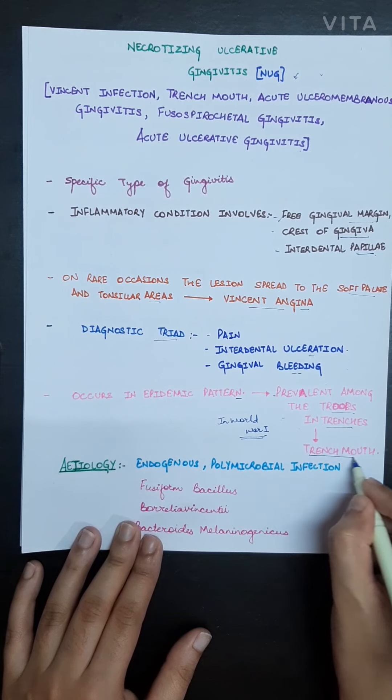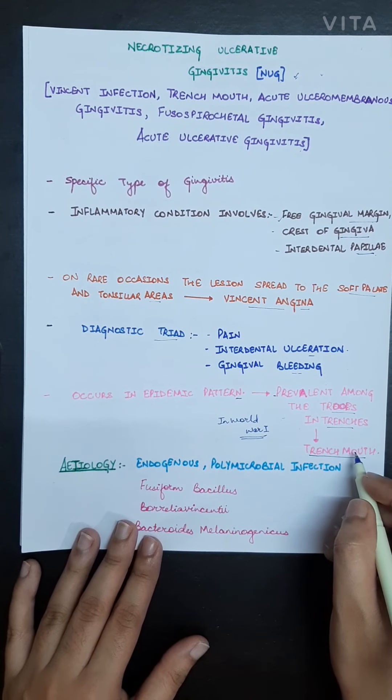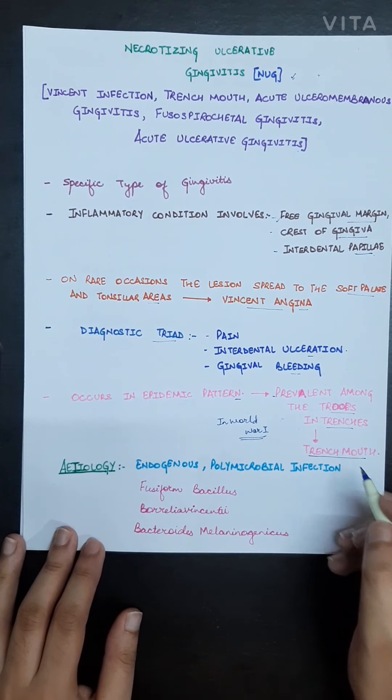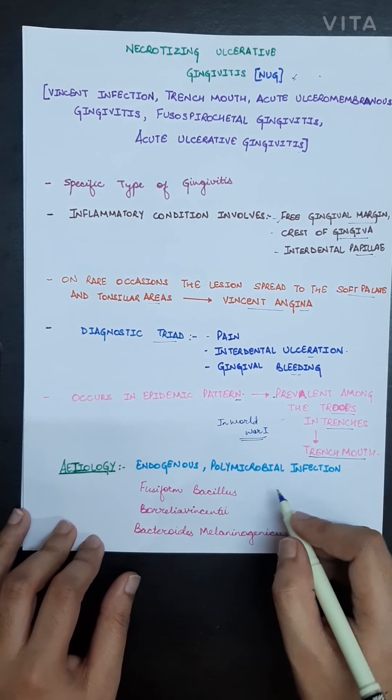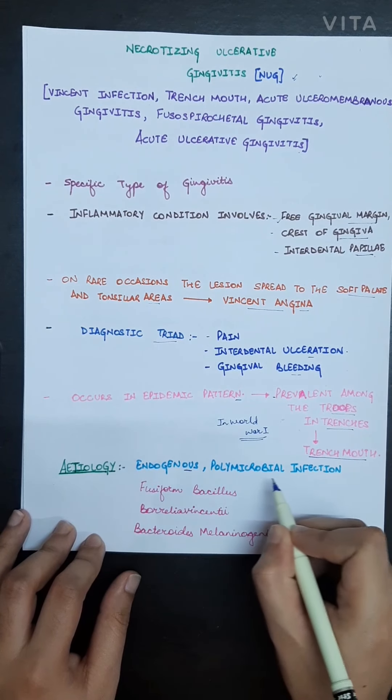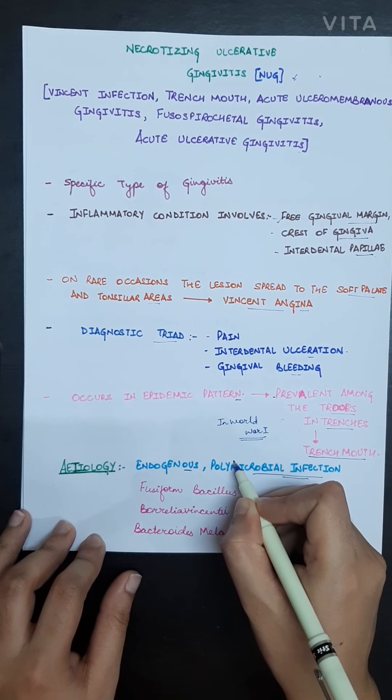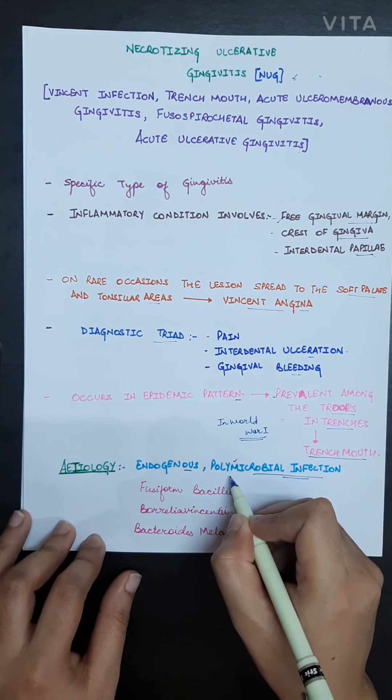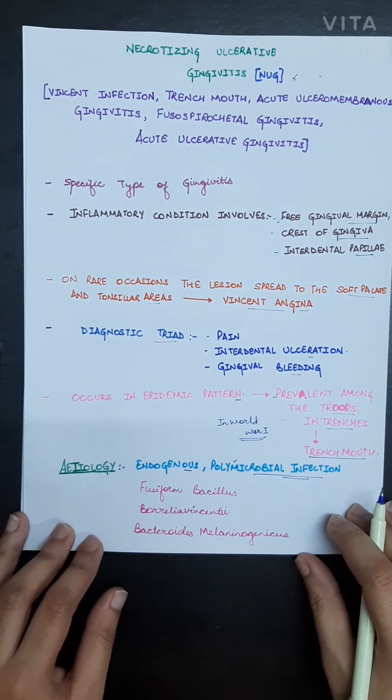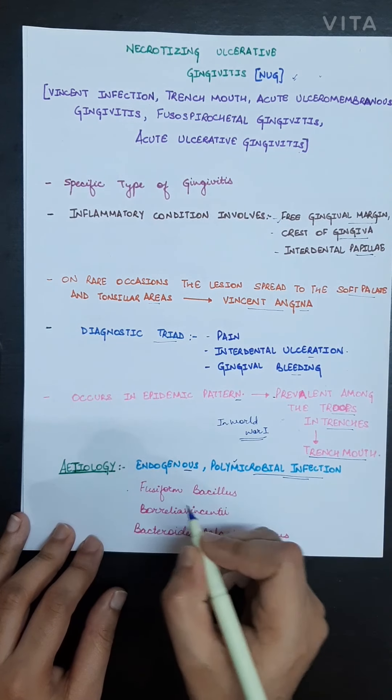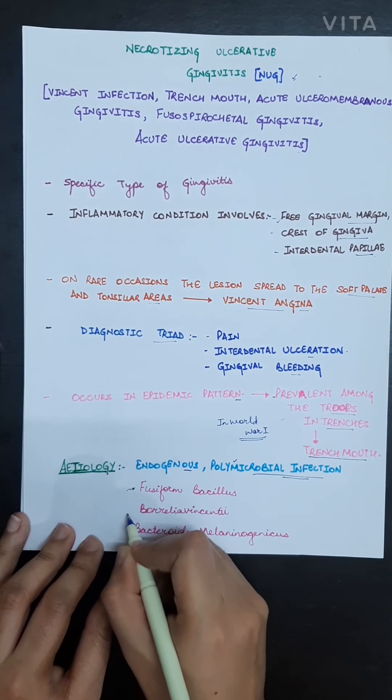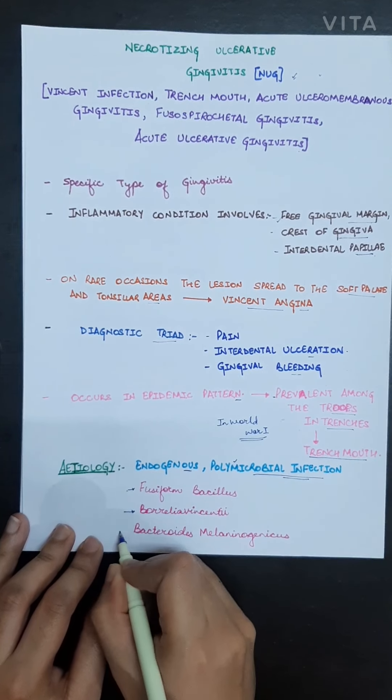Now the etiology: it is basically endogenous and it is a polymicrobial infection as it is caused by different microorganisms such as fusiform bacillus, Borrelia vincenti, and Bacteroides melanogenicus.